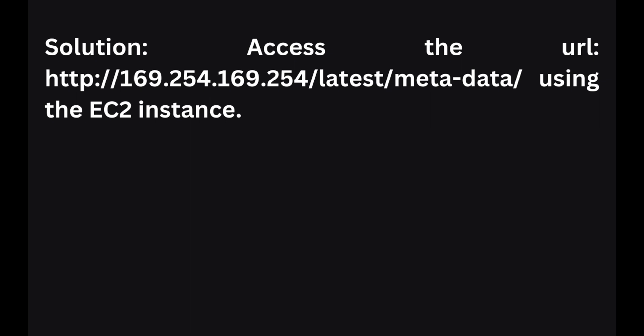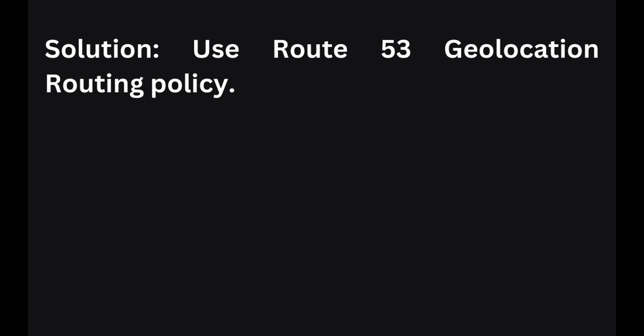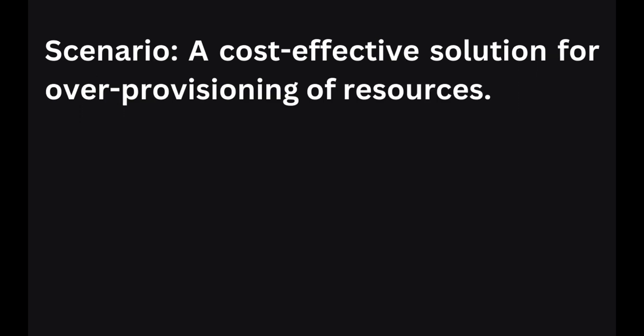In the next scenario, you need to route internet traffic to resources based on the location of users. To do this, you can use the Route 53 geolocation routing policy. This policy allows you to direct users to specific resources based on their geographic location, providing a localized experience.